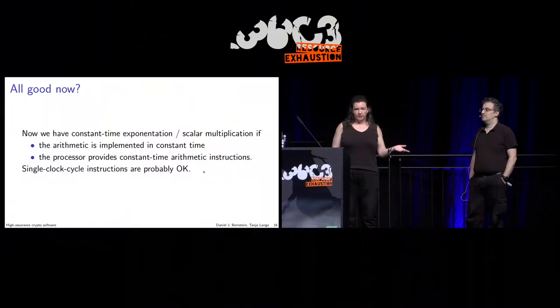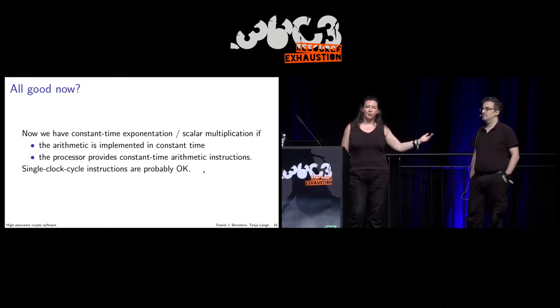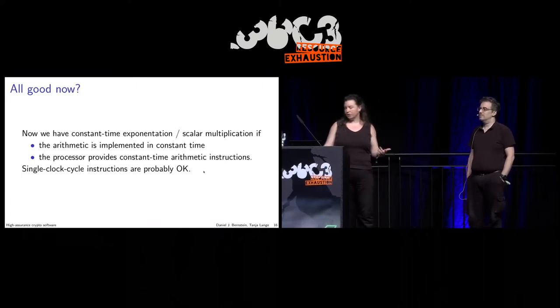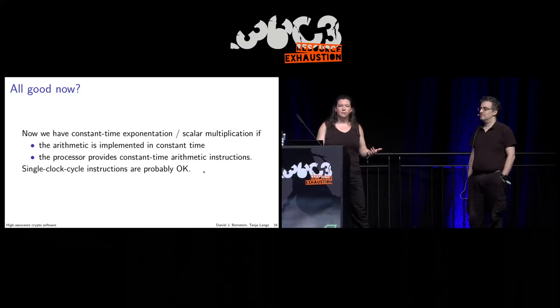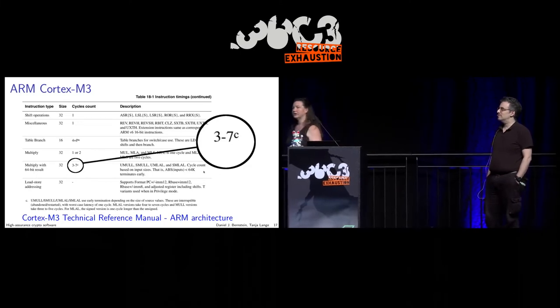But it may say it can do this in one clock cycle because it can do it faster. Possibly that's fine — it's an optimization. But what about other processors? For example, the ARM Cortex-M3.